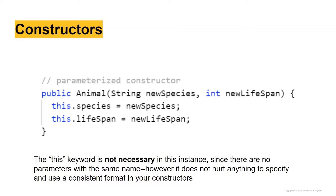Here is our parameterized constructor for the Animal example. We write 'public Animal' and in the parentheses we specify the parameters — a String and an int. If the caller doesn't provide exactly those types, the compiler won't allow it; if nothing is provided, the default constructor is used instead. The 'this' keyword isn't strictly necessary here since I named my parameters 'newSpecies' and 'newLifespan', but if I had just called them 'species' and 'lifespan', it would have been necessary. I still prefer using 'this' for clarity and readability.